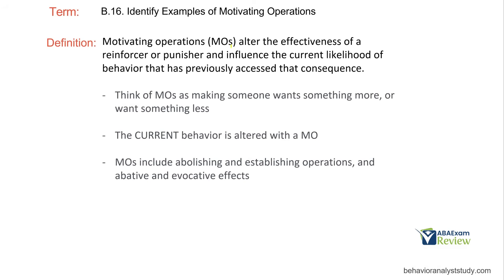Motivating operations, or MOs, alter the effectiveness of a reinforcer or punisher and influence the current likelihood of behavior that has previously accessed that consequence. Two key things here: MOs altering the effectiveness or value of a consequence — that's number one — and then influencing current behavior. The value of a consequence is altered, which leads to the changing of current behavior. Our contingency is the MO, the SD, the behavior, and the consequence — that four-term contingency.